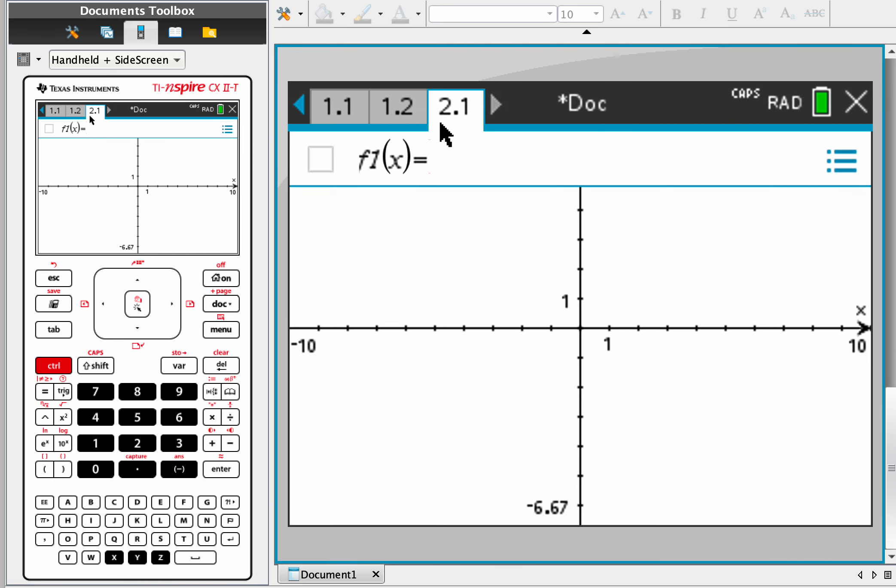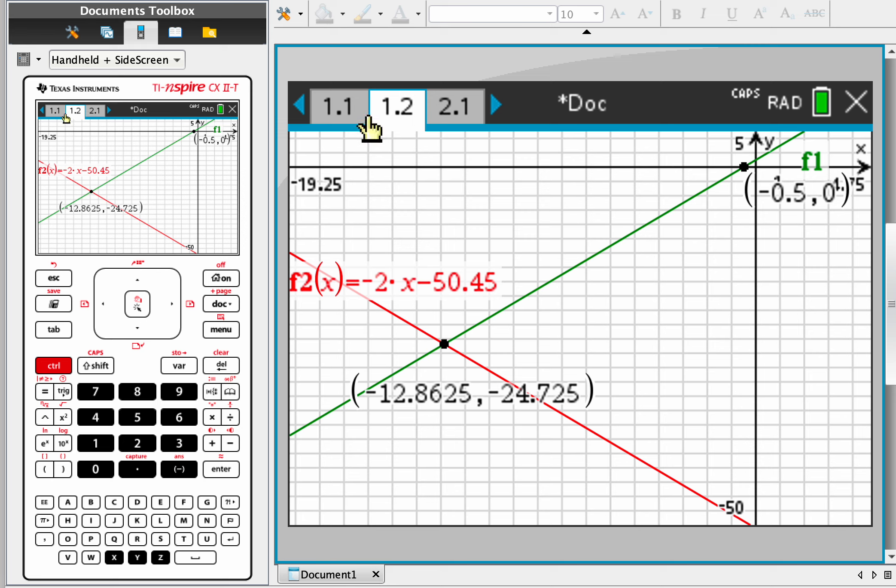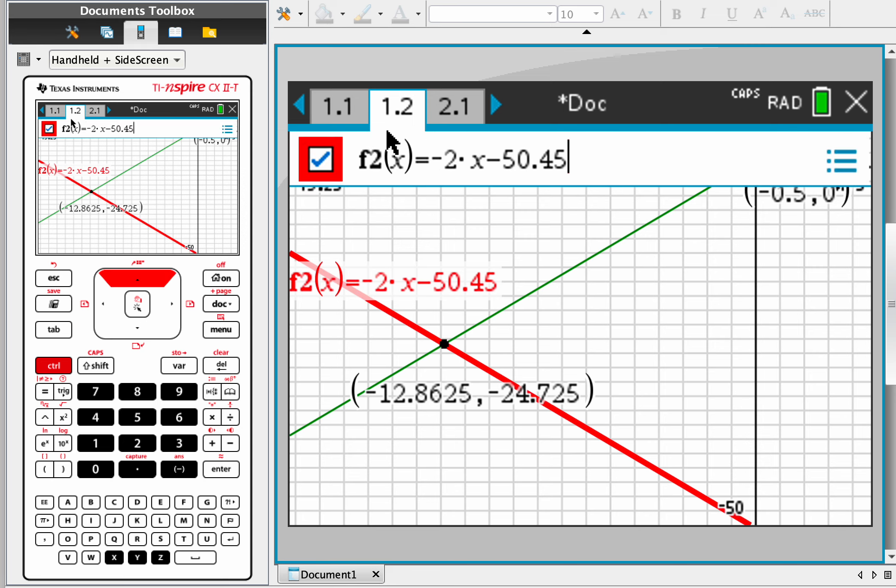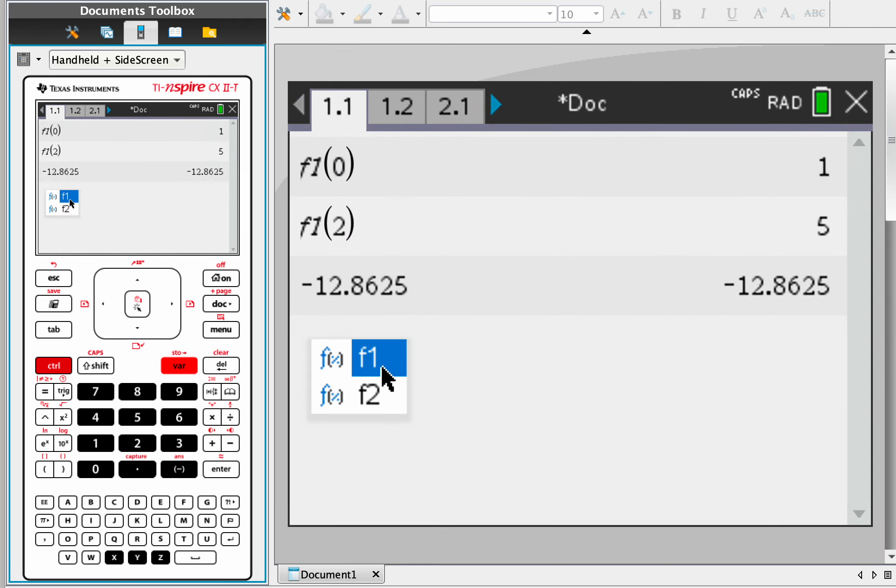Now, what's good about this is, if you remember, in this example we already have f1 and f2, and they're already defined. So for example, if we go to var here, f1 and f2 are defined.